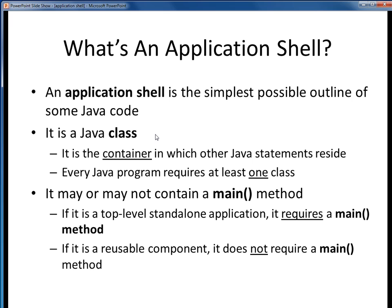Remember, we said earlier that everything in Java is a class. There is a one-to-one correspondence between any Java class and the .java file in which it resides. So if we were to create a new Java class called foo, it would live in a file called foo.java. Every Java program must consist of at least one class, but that class may or may not have within it a main method. It all depends on our intended purpose for that class. For example, if our class is intended to be a top-level stand-alone application, then it must have a main method. However, if our class is intended to be some reusable component, then it would not require any main method.